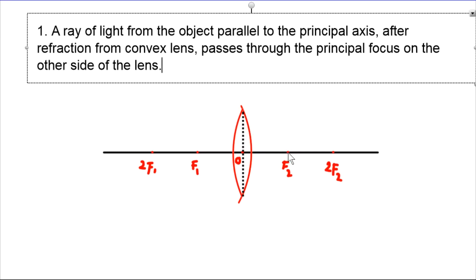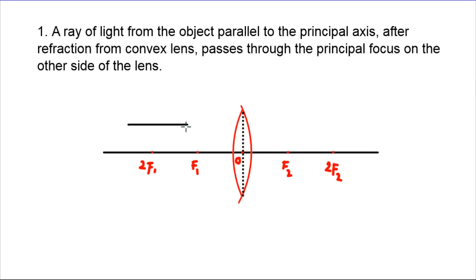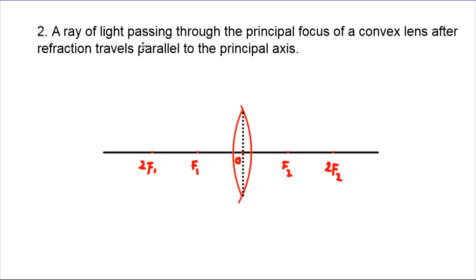The ray travels toward the focus on the other side. A ray of light passing through the principal focus of a convex lens, after refraction, travels parallel to the principal axis.